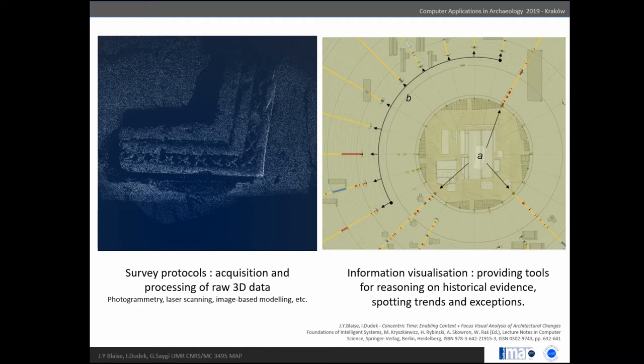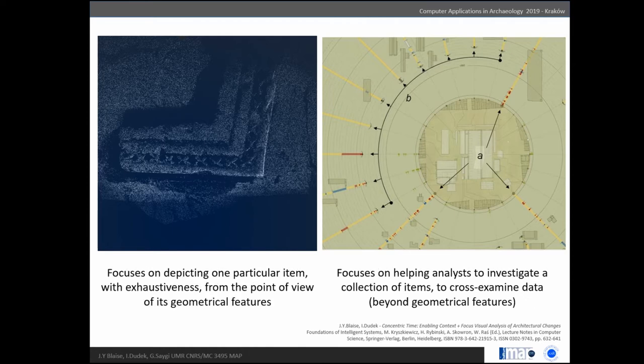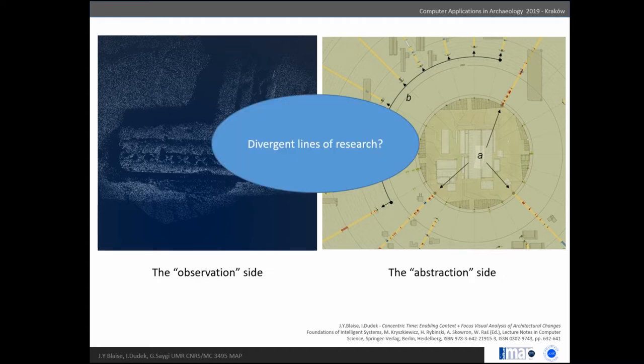What you see in black are edifices that have been destroyed at the beginning of the 19th century. So what we do is, on one hand, focus on depicting one heritage item from the point of view of its geometrical features. On the other hand, we analyze sets and collections of heritage items beyond geometrical features. The experiment I'm presenting today is trying to bridge that gap between the two lines of research.